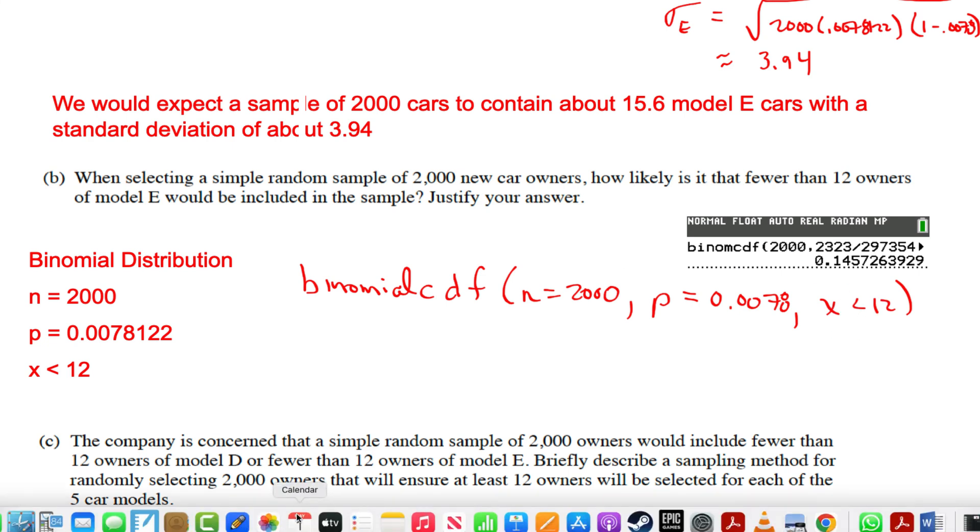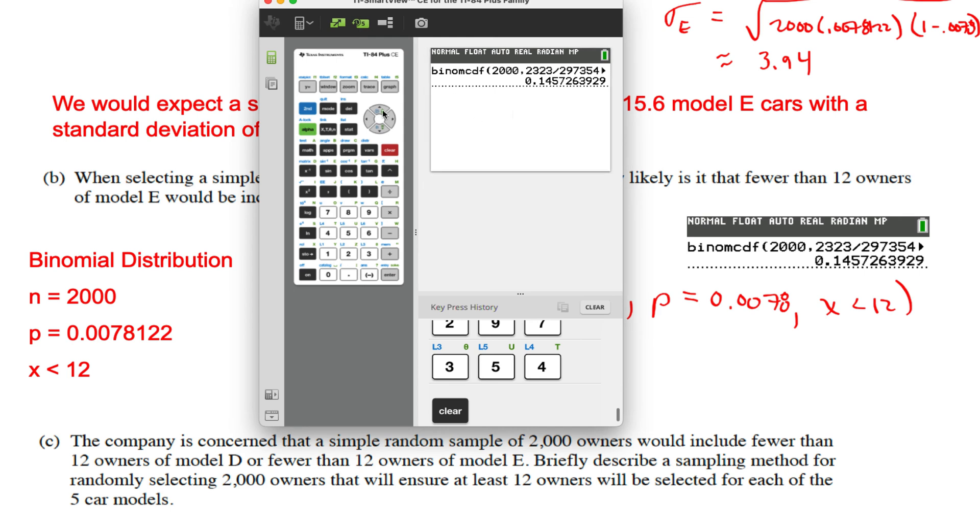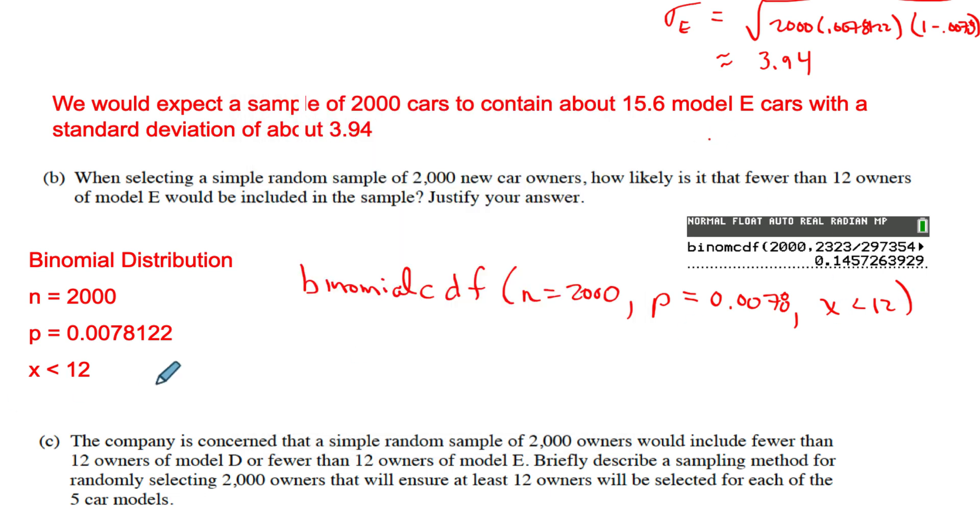When you pull it up in your calculator, let's look at it. What do we pull up here? Binomial, 2000, and p - actually I just wrote that fraction in there the way it was. I like to be super accurate. Then you put 11, and it's cumulative, so it's going to add up from zero all the way to 11. That's what we want, that's fewer than 12. When we're done with that, what do we get? 14.57%. Let's do a context statement there too. There is a 14.57% chance that a sample of 2000 would contain fewer than 12 cars. Answer their question, boom.